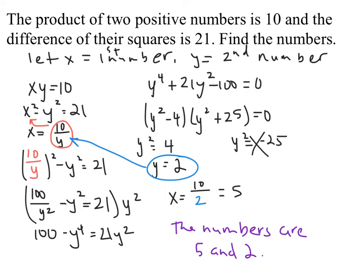Product means multiplication, so the first equation is xy equals 10, and the second is x squared minus y squared equals 21. Using substitution, I solved the first equation for x: x equals 10 divided by y. Substituting into the second equation gives (10/y)² minus y² equals 21, or 100/y² minus y² equals 21. Multiplying everything by y squared gives 100 minus y to the fourth equals 21y squared. Setting everything equal to 0 and treating it like a quadratic — since we have an even power, half that power, and a constant — it factors as (y² − 4)(y² + 25) = 0.